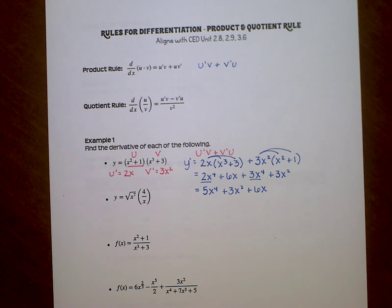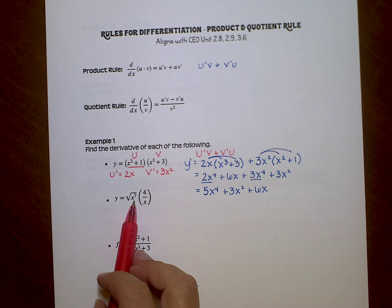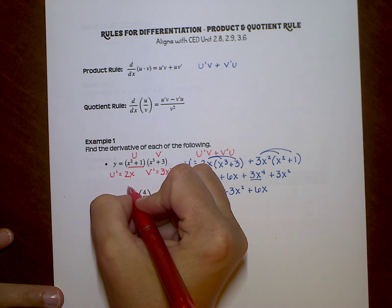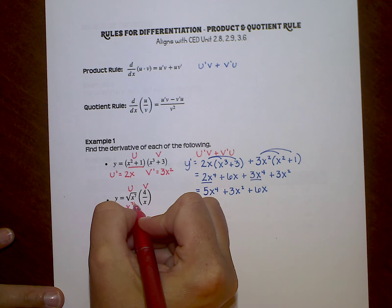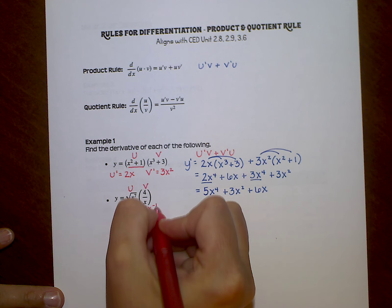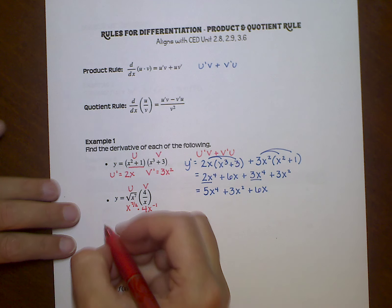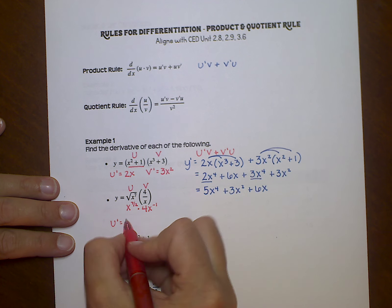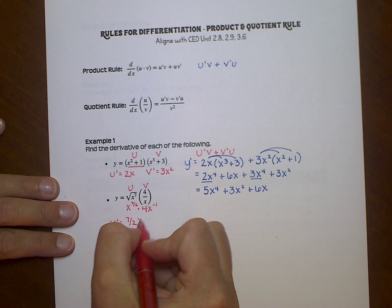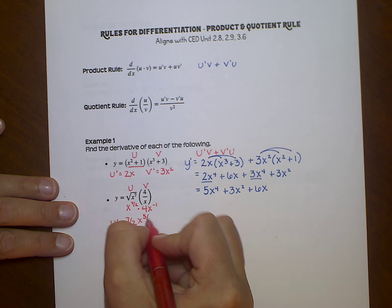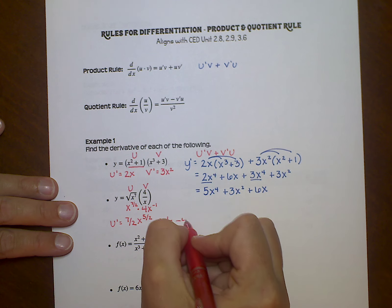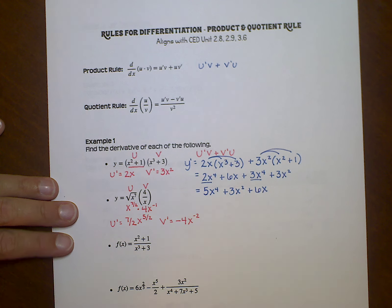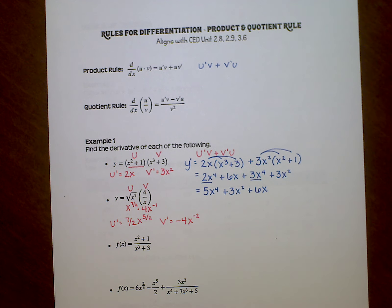This next example is one we actually worked with yesterday — I made you multiply it together, and the multiplication was a little bit messy. So let's try it again using the product rule. This is my u, this is my v. I want to remind you that this could be written as x to the power of 7 over 2, and this could be written as 4x to the negative 1 power. Let's find u prime: I'm going to multiply by 7 over 2 and then subtract 1, which is 2 over 2, so the exponent becomes 5 over 2. And v prime will be negative 1 times 4 is negative 4, and then x to the negative 2. I'm just going to leave it with those negative exponents for now.